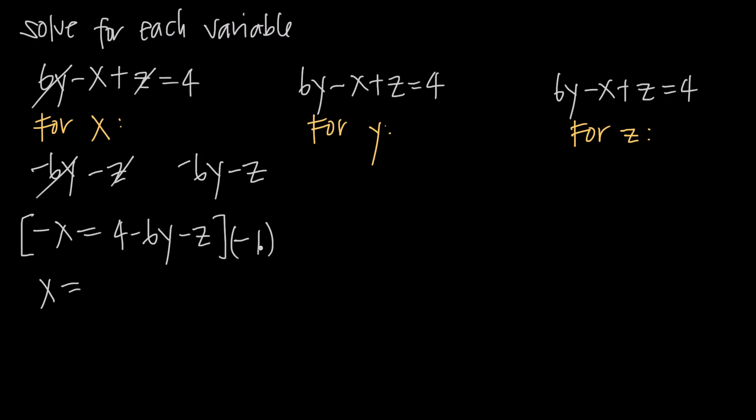Well, whenever we multiply by a negative 1, really all we're doing is flipping the sign on each term. So positive 4 becomes negative 4. Negative 6y becomes positive 6y. And negative z becomes positive z. And now we've solved for x.